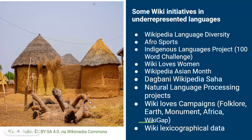Now we look at some initiatives that small wikis and underrepresented communities have developed. We have the Wikipedia Language Diversity initiative, Afro Sports (writing about footballers and soccer in general), and the Indigenous Language Project where people do the 100 Words Challenge. We also have Wiki Loves Women, where people document information about women on small-language Wikipedias like Dagwane Wikipedia, Gurne Wikipedia, Igbo Wikipedia, and other language Wikipedia platforms.